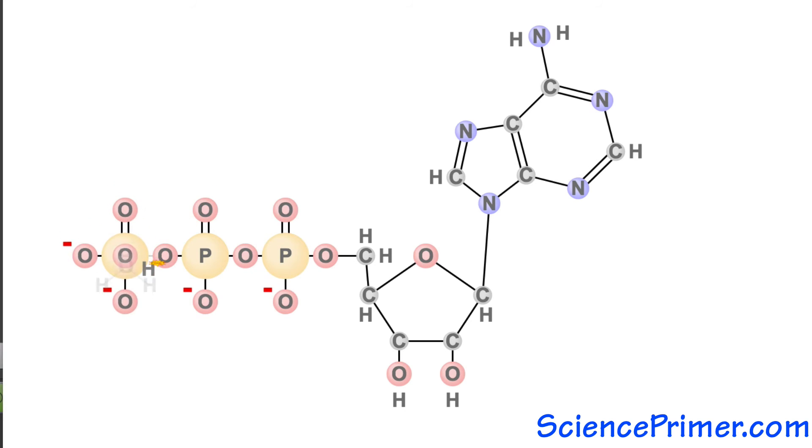Energy can be put back into ADP by adding a phosphate back on. This reforms the ATP and the potential energy present due to the repulsive force between the negatively charged oxygen atoms.